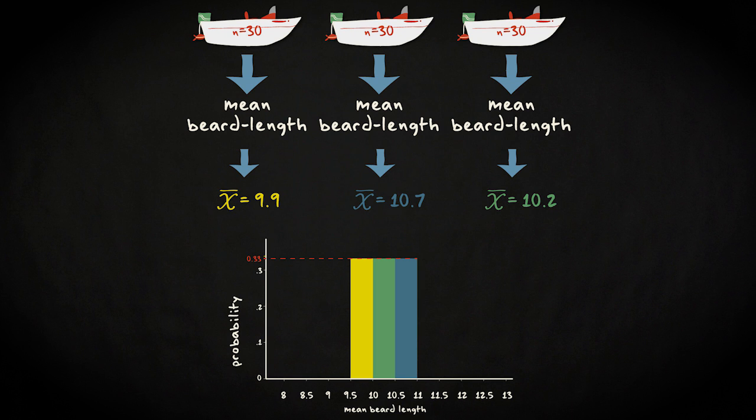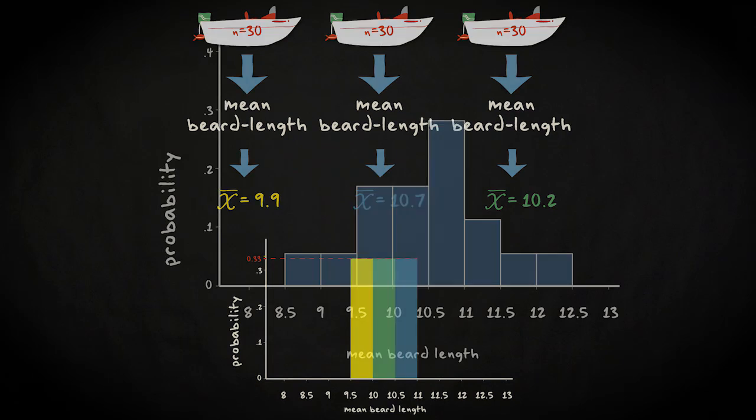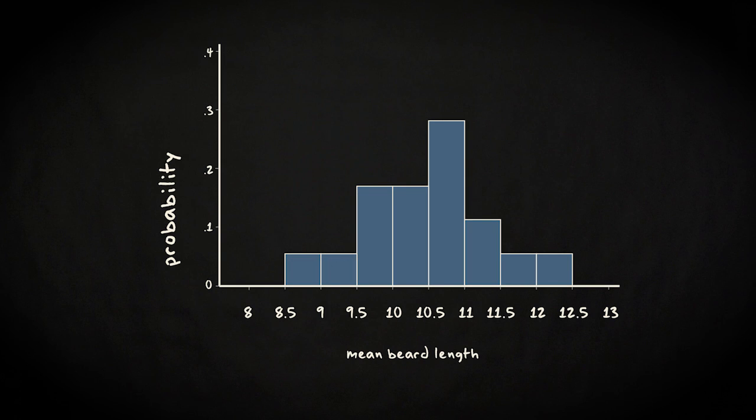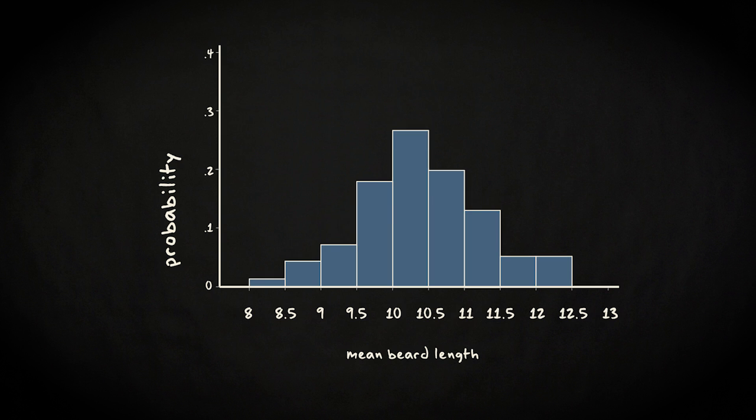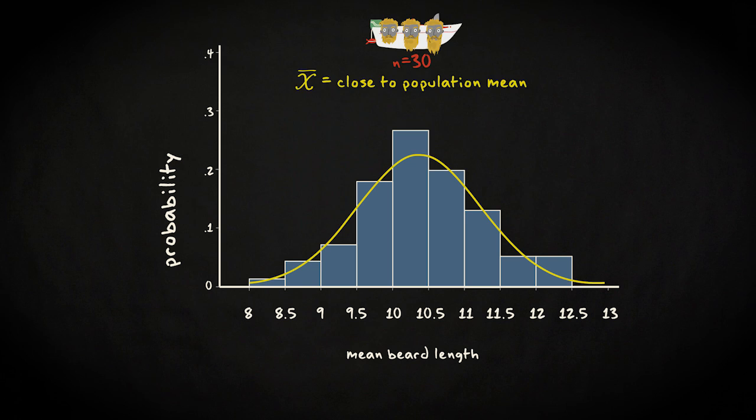Now imagine you look at 17 boats. That would look something like this. Now you look at 40 boats. And now at 100 boats. You can see that the distribution of these beard length means increasingly looks like a bell-shaped distribution. Moreover, you can see that the mean of the distribution is about 10.3 mm, exactly the population mean.